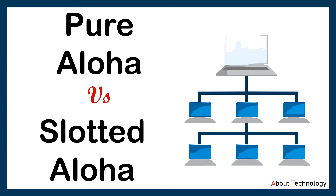Hello friends, I am Neha and I welcome you all to our YouTube channel about technology. In today's video tutorial we will discuss about a random access protocol that allows multiple nodes or users to access the same shared network. Here we will particularly discuss about Aloha protocol, which is one of the random access protocols where all the stations in the network have same priority and can access the shared channel depending upon its state. We will be learning about two types of Aloha protocol: pure Aloha protocol and slotted Aloha protocol, and also the differences between them.